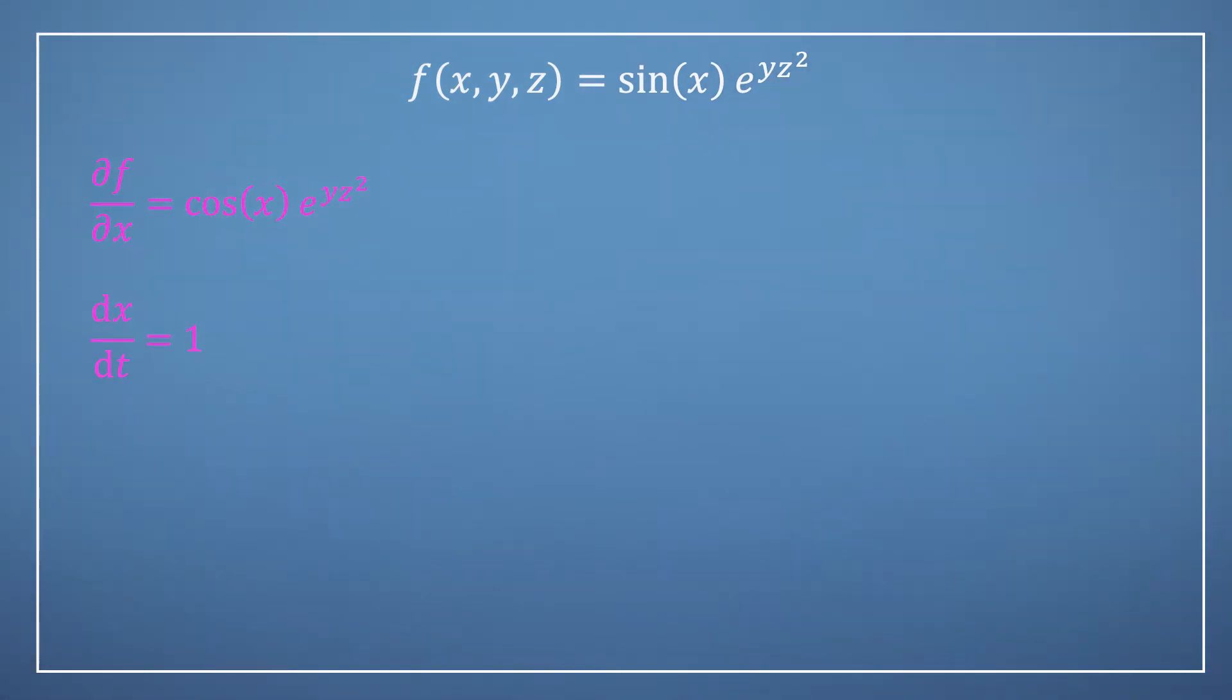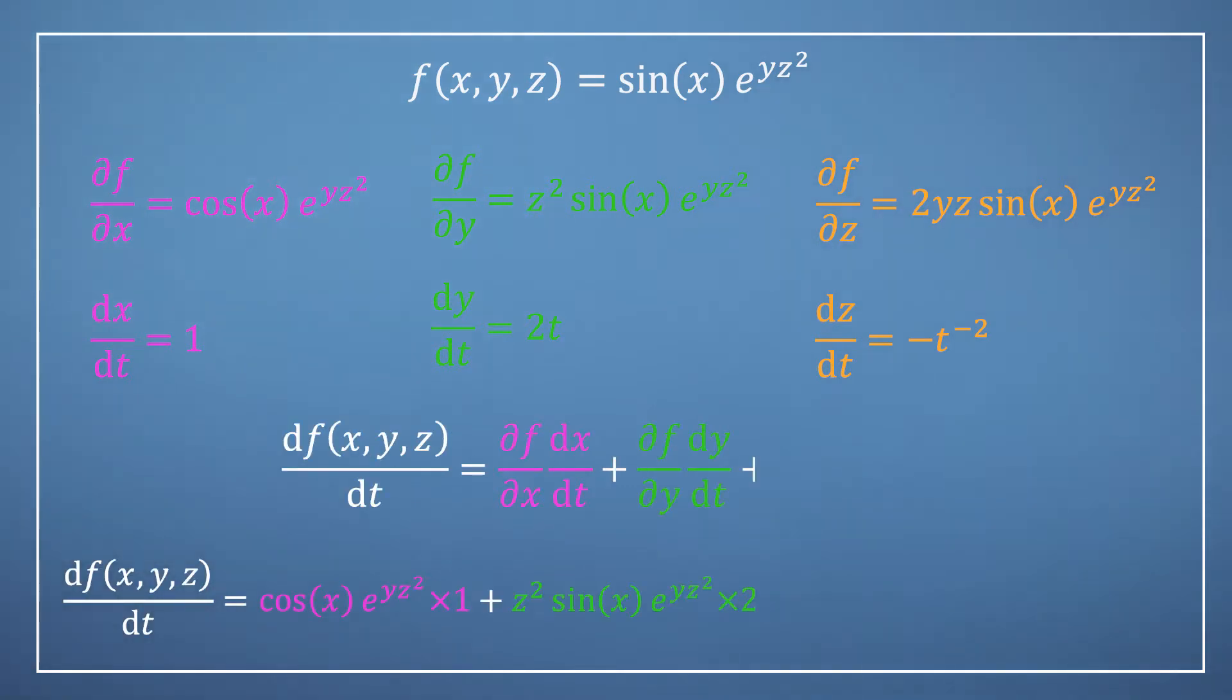So, dx by dt is clearly 1, dy by dt is 2t, and dz by dt, if you remember from our 1 over t example, is minus t to the power of minus 2. Nothing hugely complicated here.